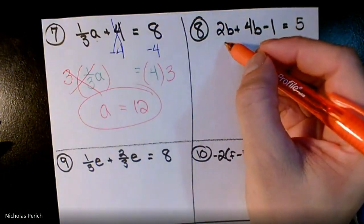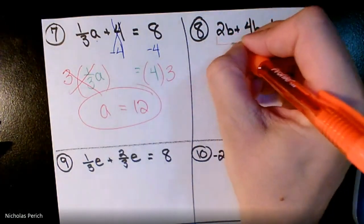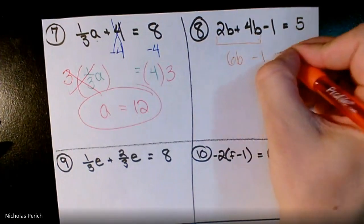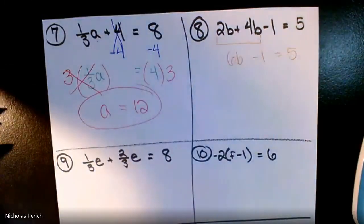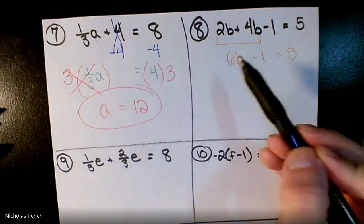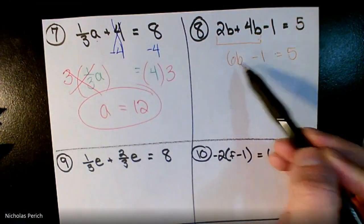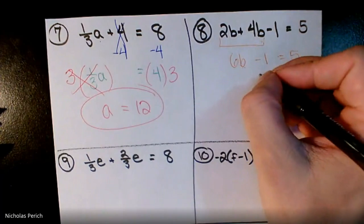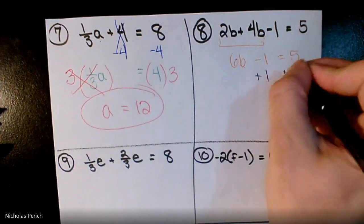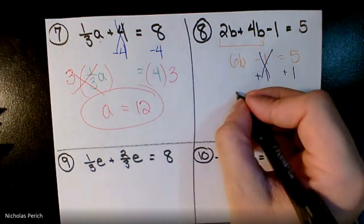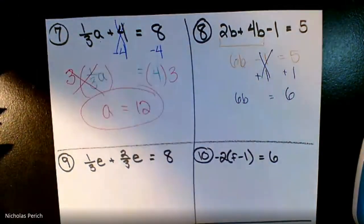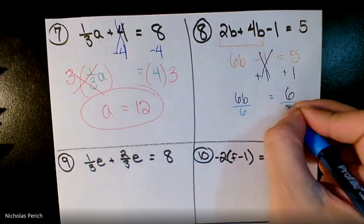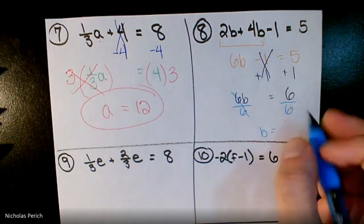I have 2b next to 4b — combine them: two bananas plus four bananas is six bananas. So 6b minus one equals five. Is b all by itself? No — get rid of the minus one floating around by adding one to both sides. 6b equals six. Divide everything by six: b equals one.